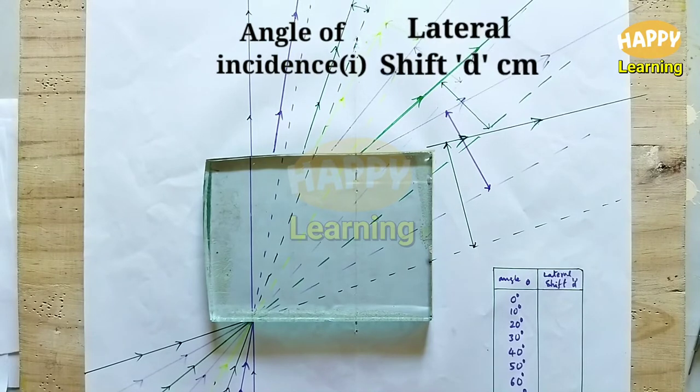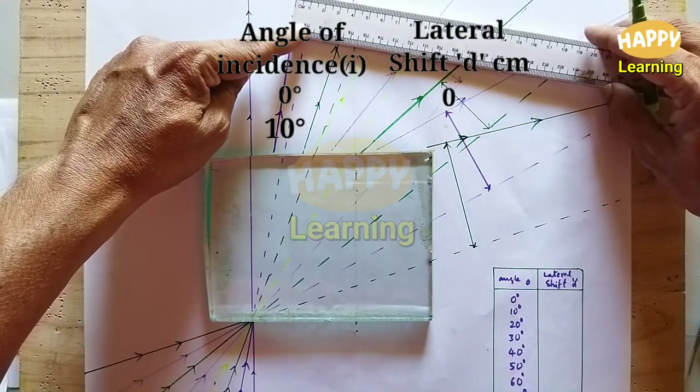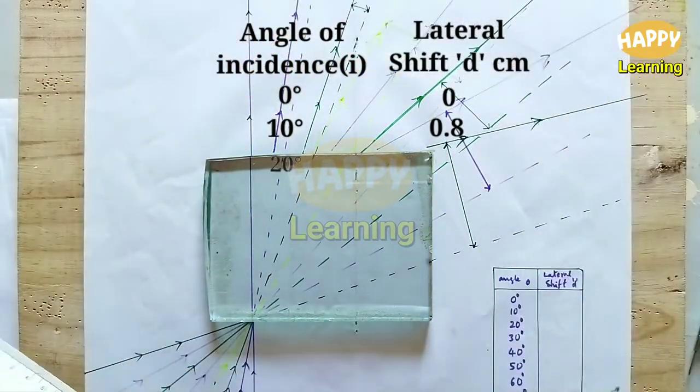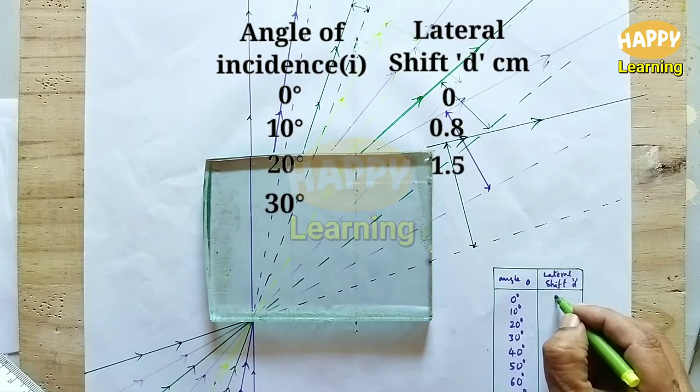The values are tabulated for normal incidence, that is the angle 0, lateral shift is also 0. For 10 degrees, it is 0.8 centimeter.